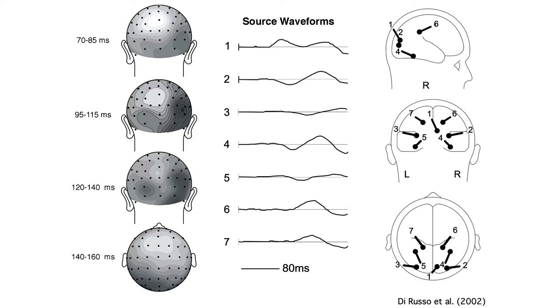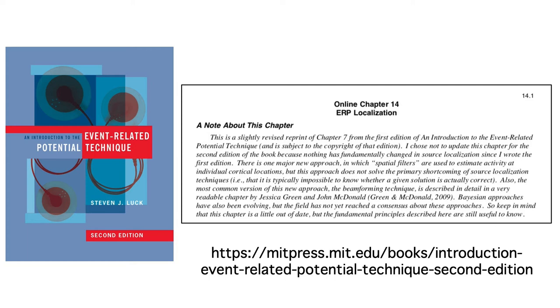Also, given noise in the data and imperfections in the forward model, it's possible for the best-fit solution to be quite different from the true solution. You can read more about these issues in this online chapter from my ERP book.